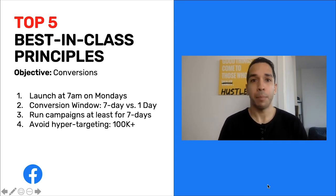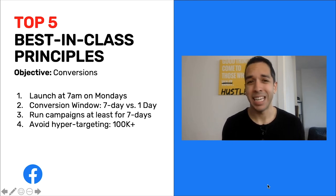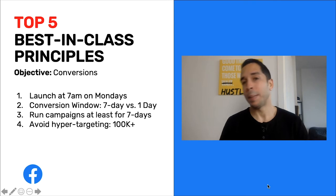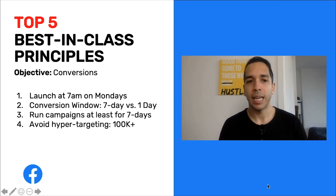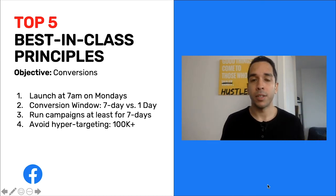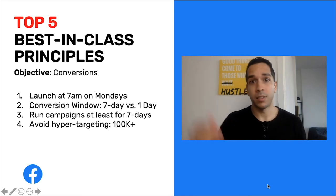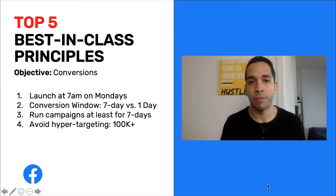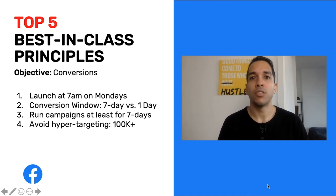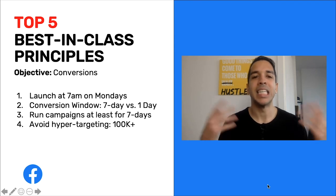The fourth principle is to avoid hyper-targeting. I aim for audiences of at least 100K in size — some people target 125K to 200K. The more you hyper-target, the higher your costs will be. The only exception is retargeting people who've already been to your website — that's a high-intent audience. Most of the best performance I see across all advertisers is in the retargeting pool, with people already familiar with the brand. You'll have a smaller audience there, but the intent is high, so it's okay.